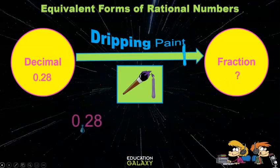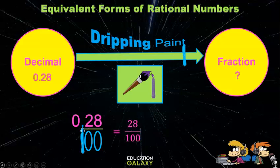We'll use the dripping paint strategy to write a decimal as a fraction. Dripping paint? Yes. Imagine the decimal point as a blob of paint that runs down and forms a one. Write a zero under each digit to the right of the decimal, and there's your fraction, twenty-eight over a hundred. Of course, simplify to get an equivalent fraction.